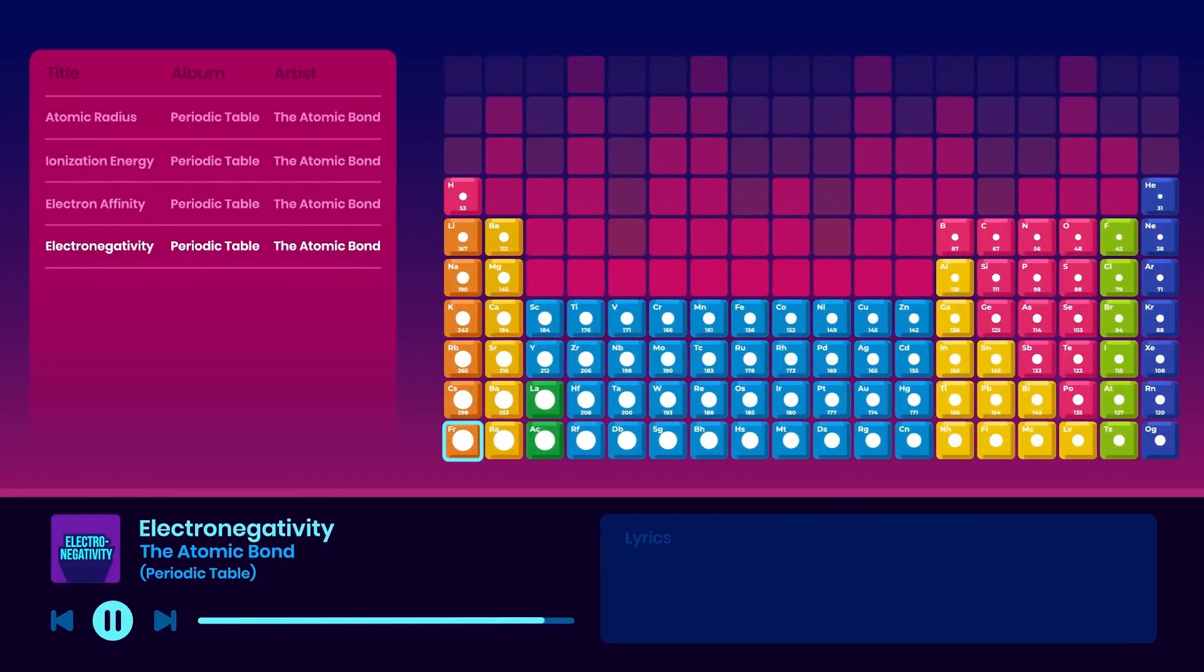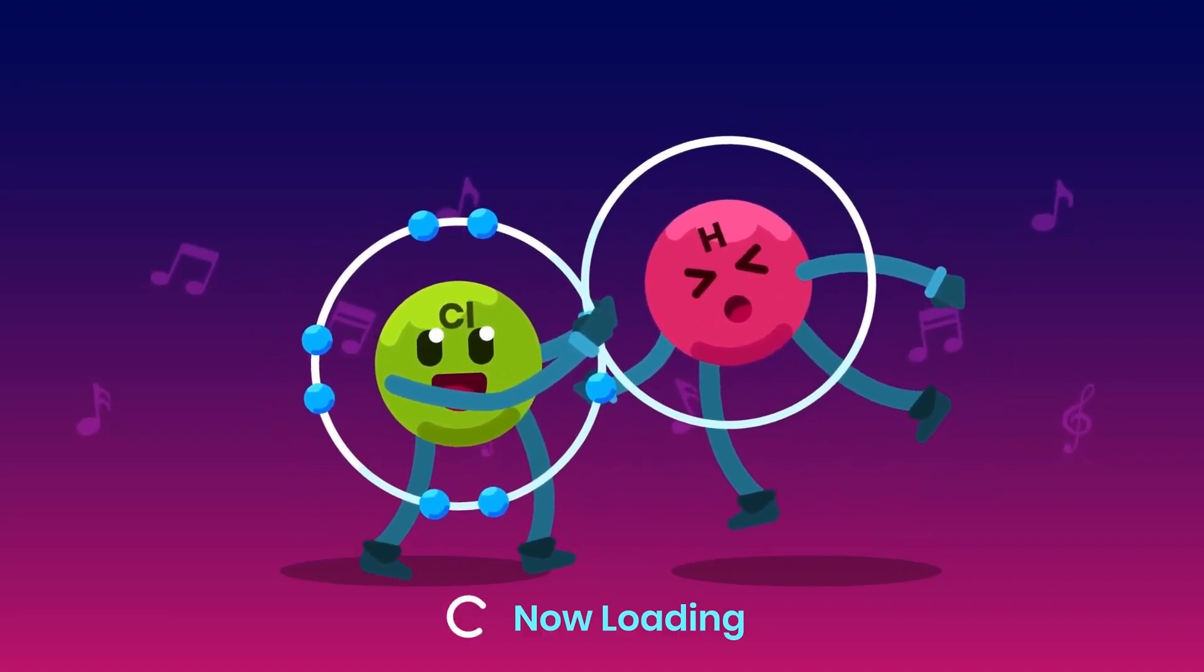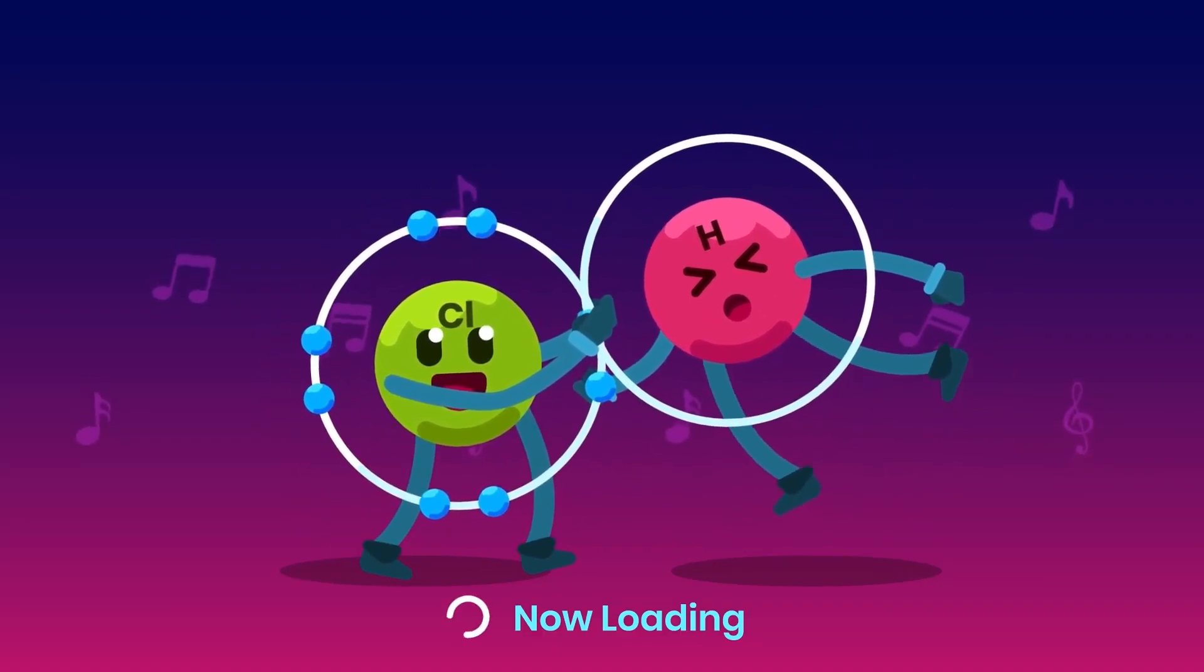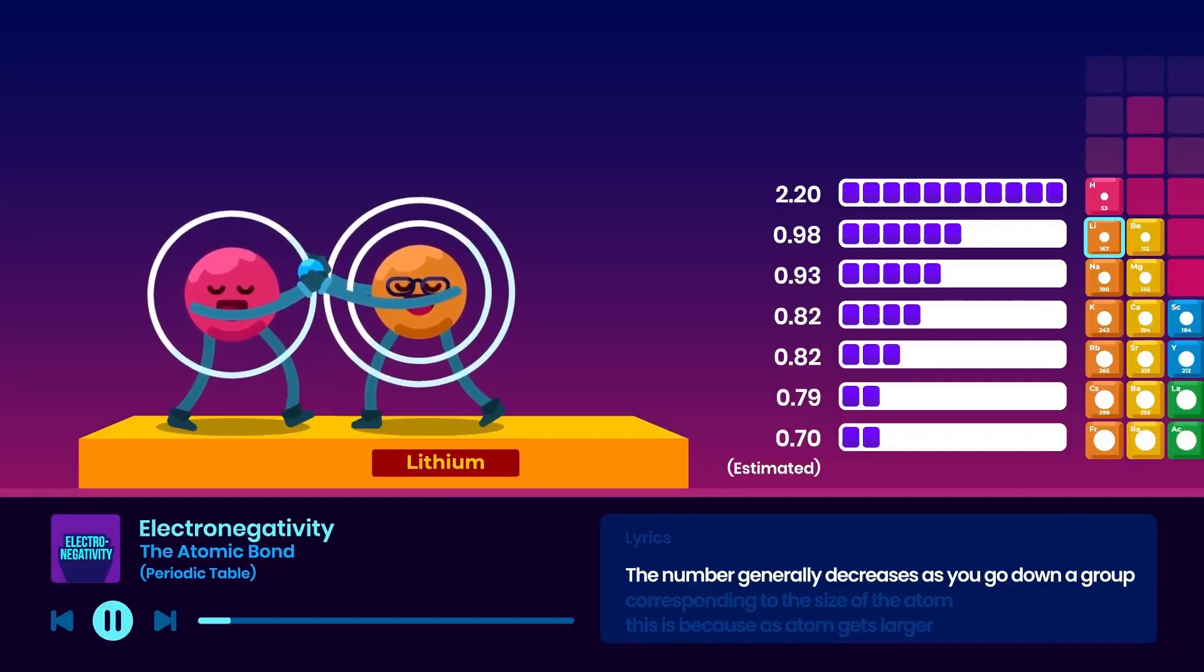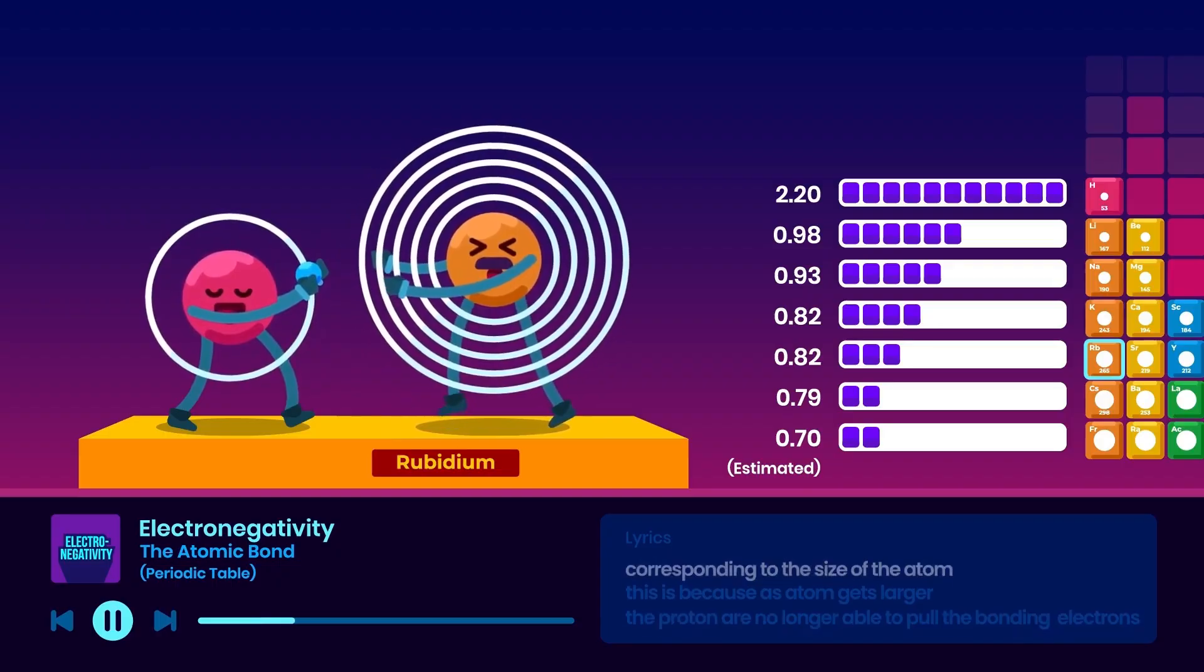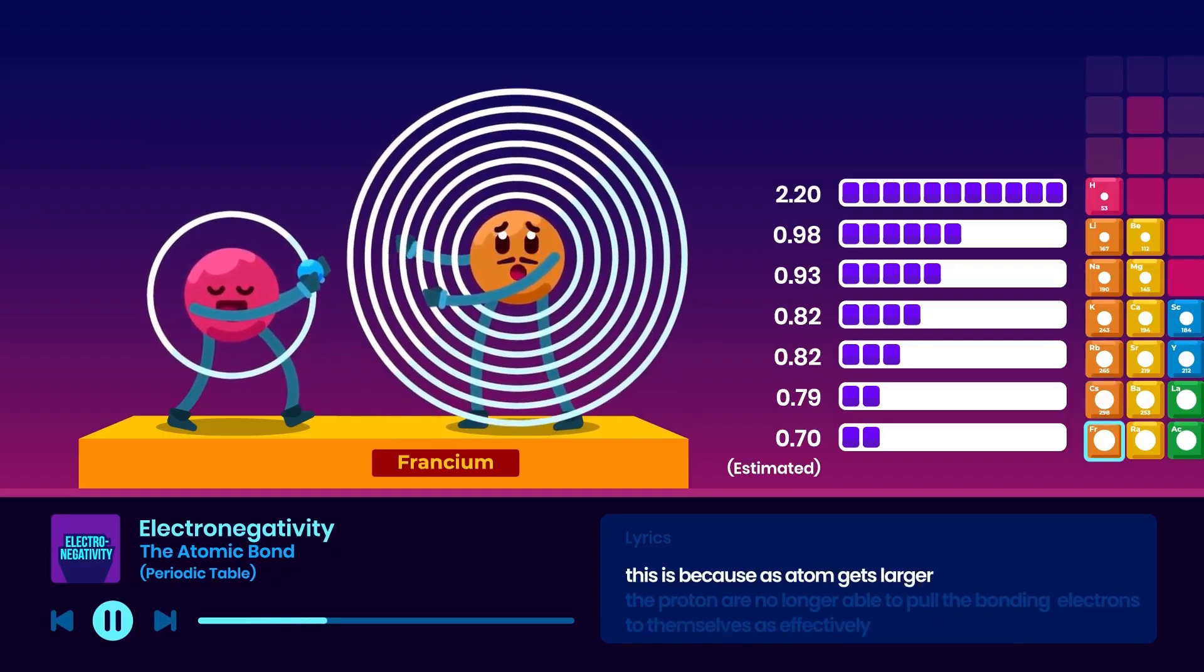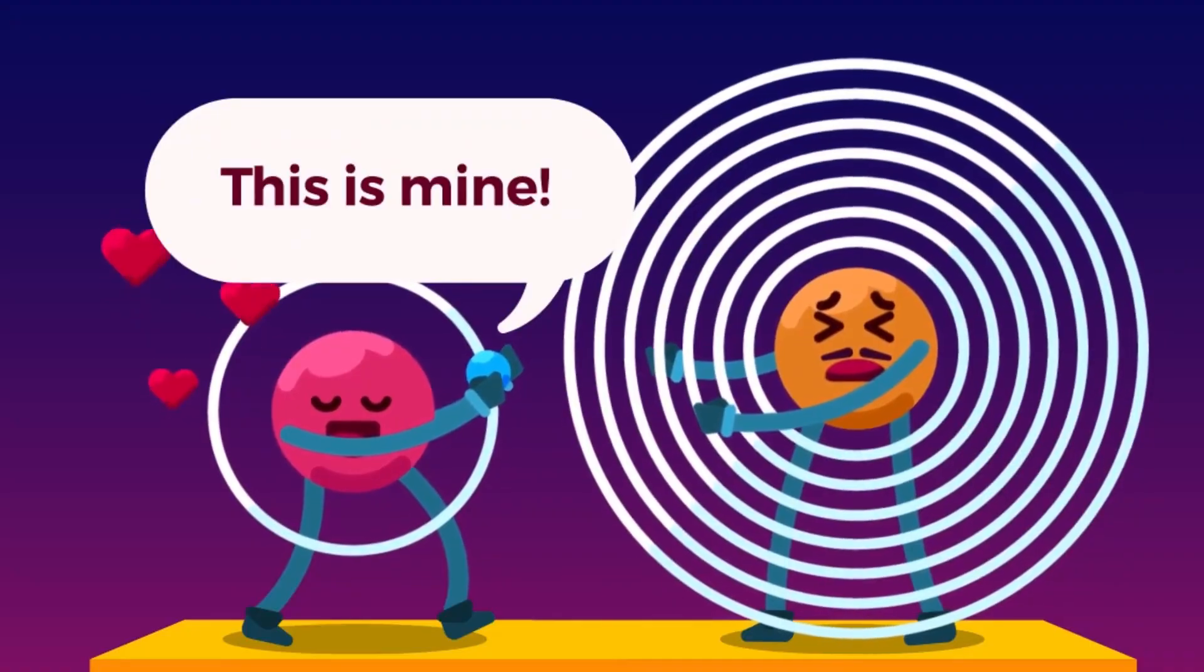The final trend, electronegativity, is the ability of an atom to hold onto its bonding electrons in a covalent bond. And just like the ionization energy and the electron affinity, the number generally decreases as you go down a group, corresponding to the size of the atom. This is because as atoms get larger, the protons are no longer able to pull the bonding electrons to themselves as effectively.